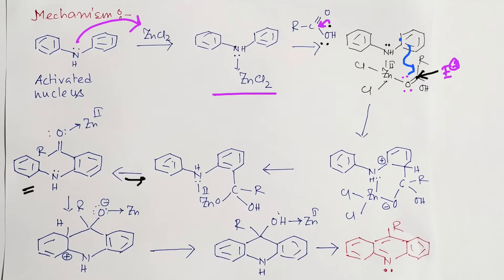Previously the coordination was between nitrogen and zinc. After water removal, there are multiple coordination possibilities — nitrogen to zinc or oxygen to zinc — but experimentally we observe that oxygen coordinates as Lewis base to zinc as Lewis acid. So after this adduct formation the reaction continues.